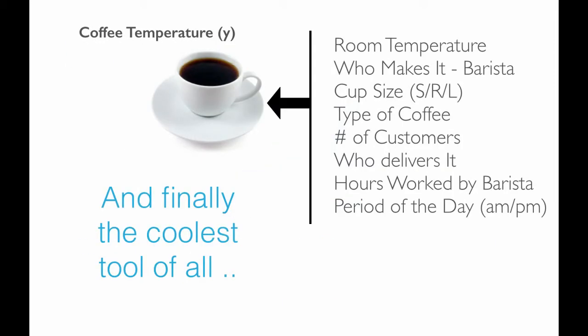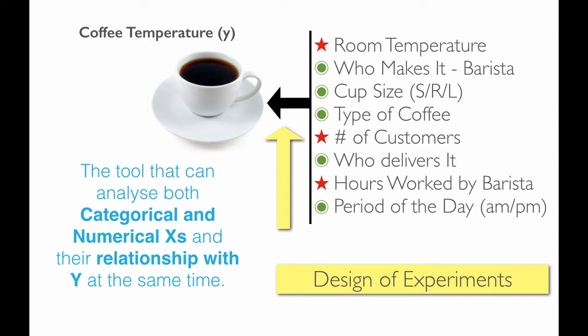Finally, the coolest tool of all is the design of experiments. The design of experiments is unique in that it's a tool that can be used to analyze both categorical and numerical X's and their relationship to Y all at the same time. It's a more advanced tool that takes a little longer to learn and understand, but it does all of this in one chunk — one analysis.